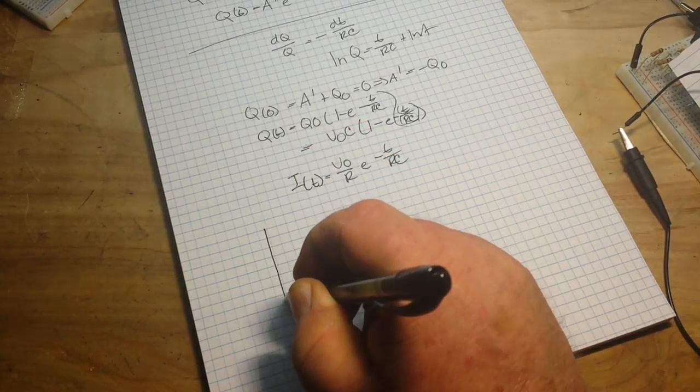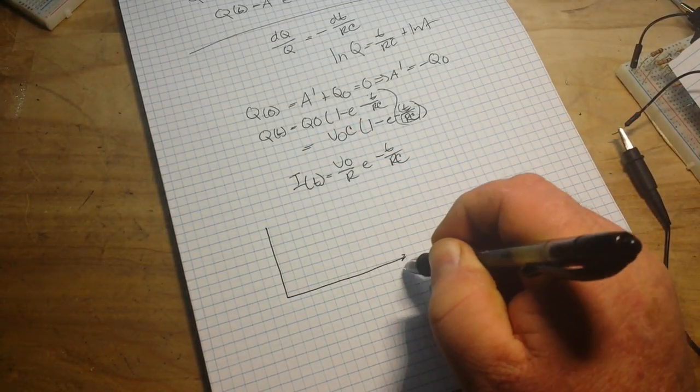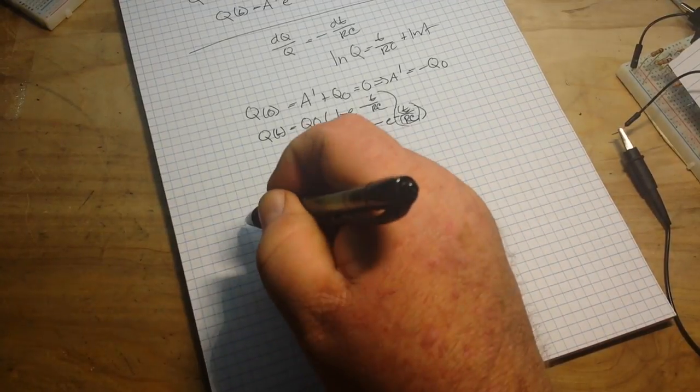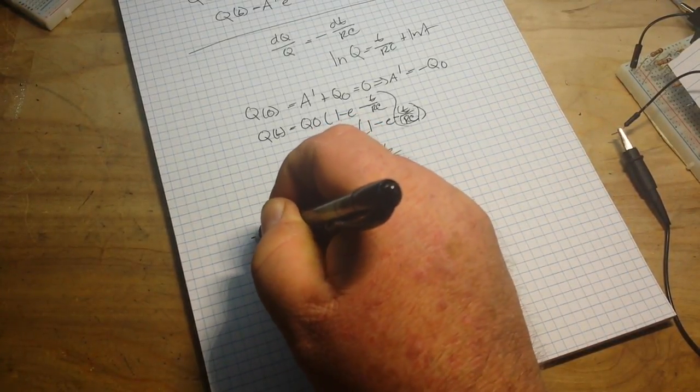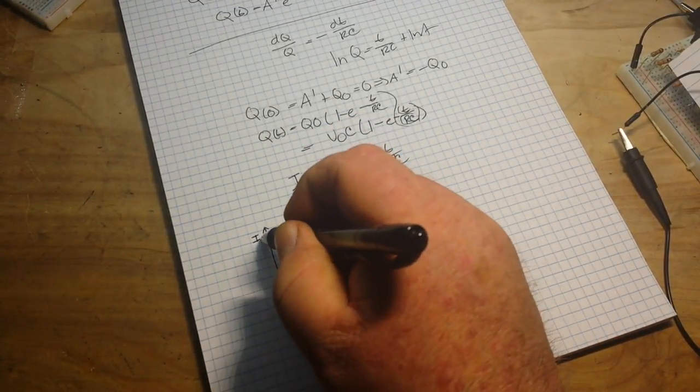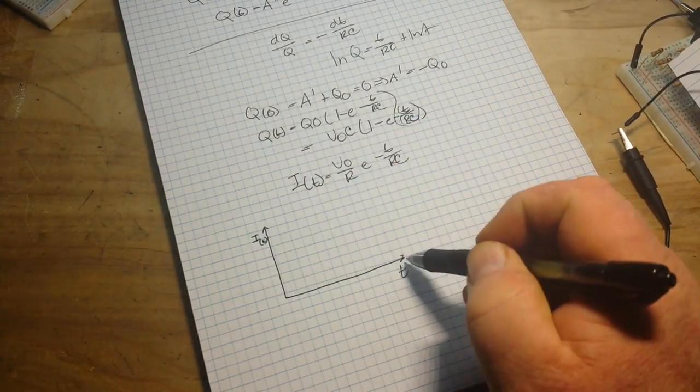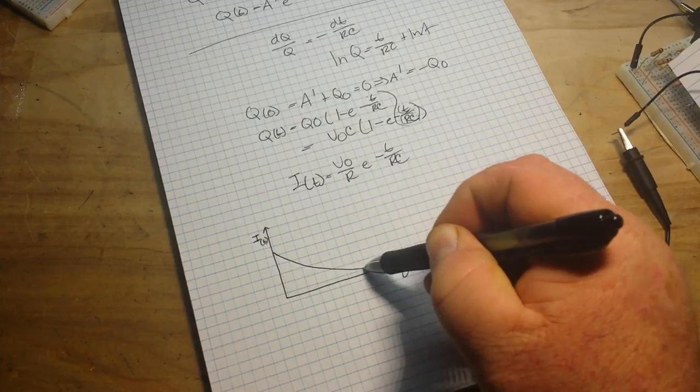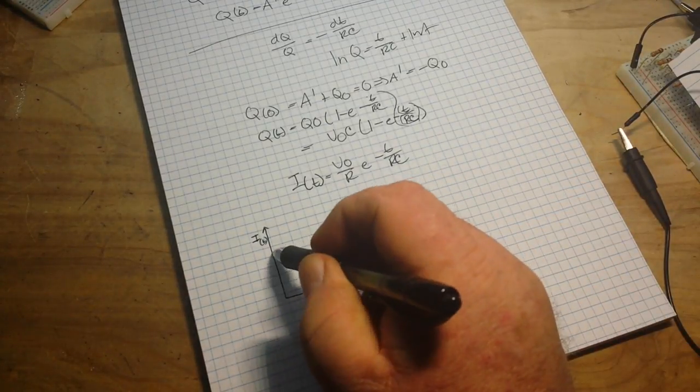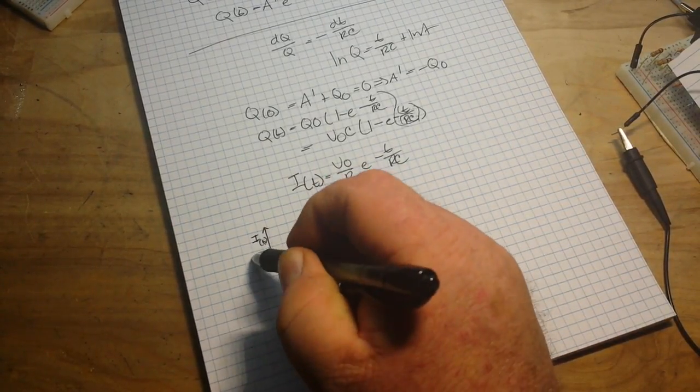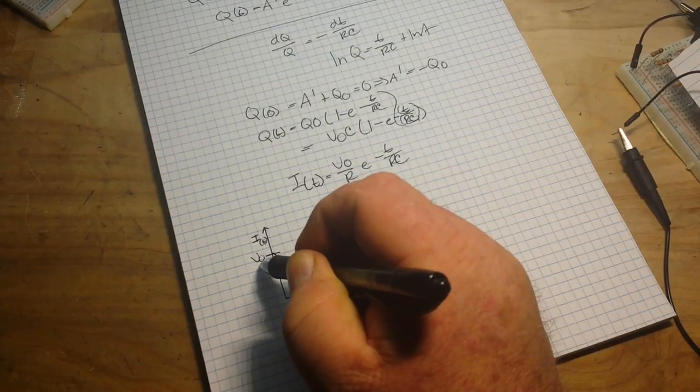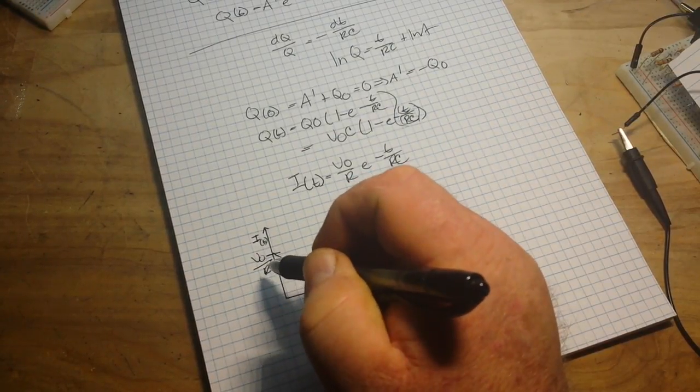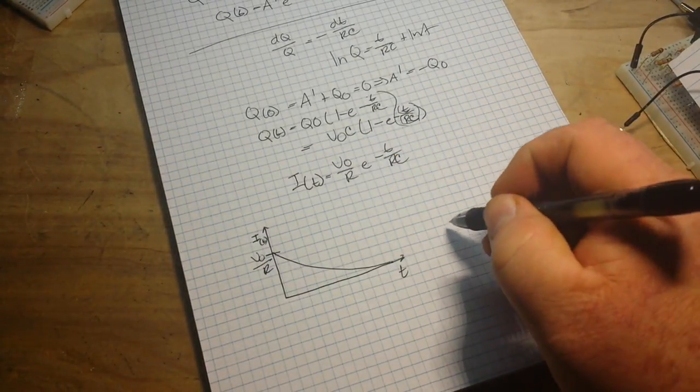So if we draw ourselves a little graph here, this is T, this is I, this is our current at this point at our point T. And then our graph kind of looks like this. And we can say this point here is V zero over R.